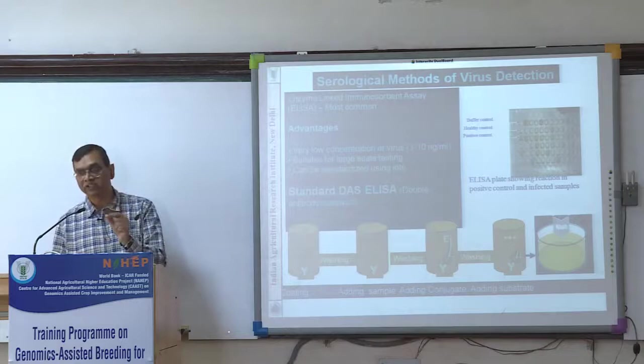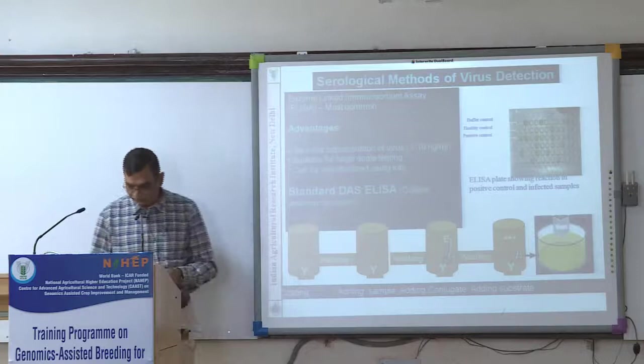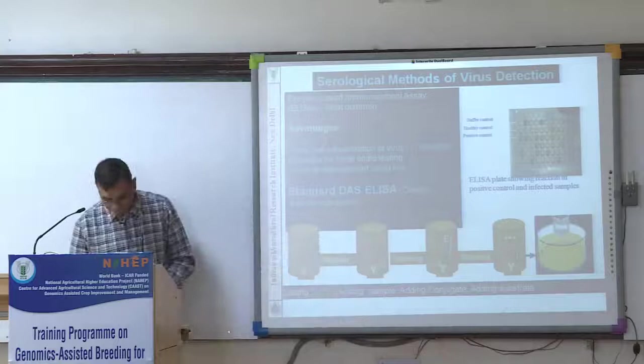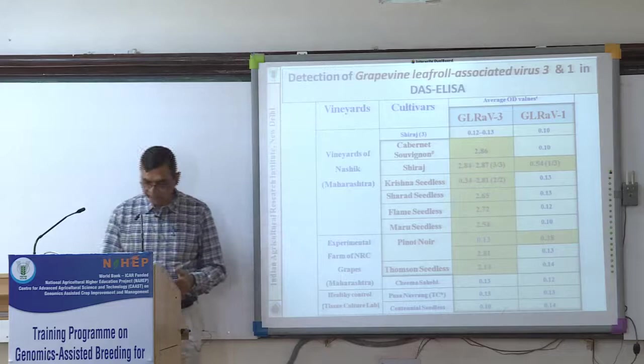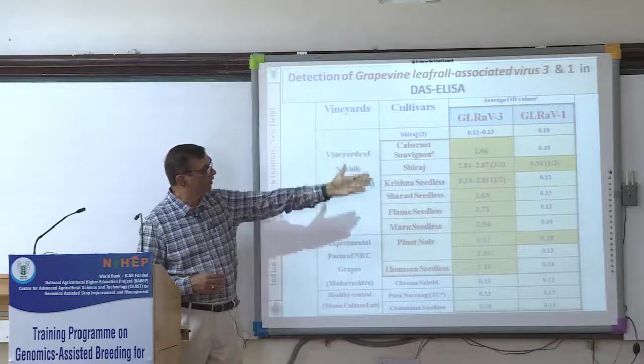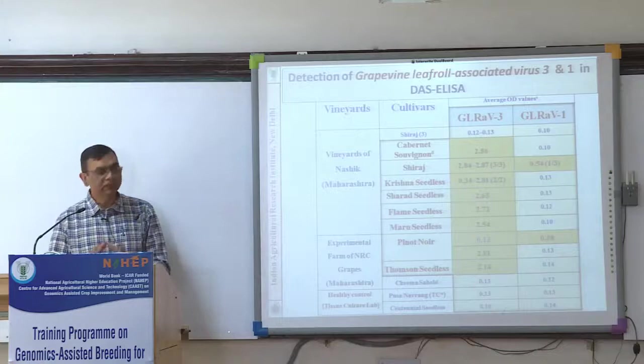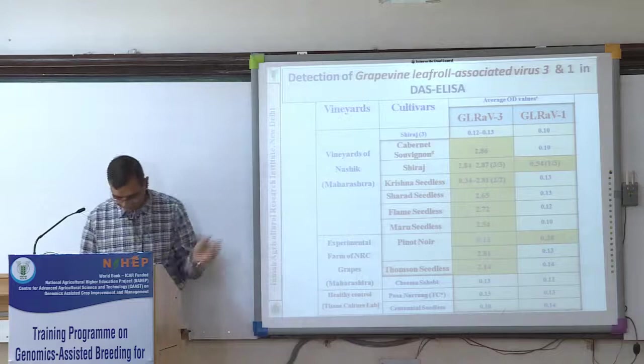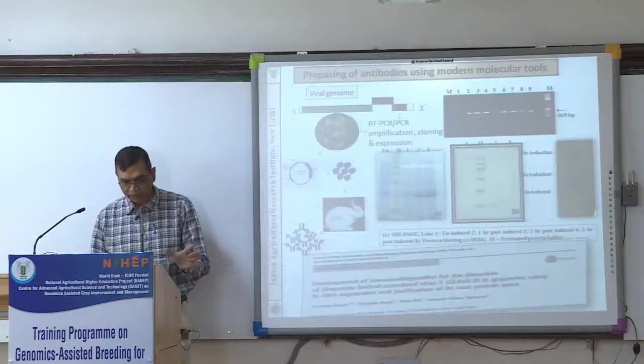Using ELISA, one can quantify through optical density at 405 nm in an ELISA reader. If the value is more than two times that of the healthy plant, it is called positive. One must use positive control, negative control, and buffer control. In 2010, we collected samples from different vineyards and different varieties — GLRV-3 was common in most vineyards, and in a couple of vineyards we also found GLRV-1. This was the first record we made, and we had one PhD student work on characterization of this virus and production of antibody.